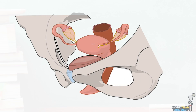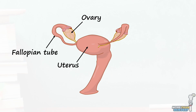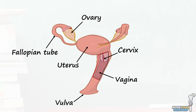The female reproductive system might seem complicated, but we can start by breaking it down into a few key areas. There are the ovaries, the fallopian tubes, the uterus, the cervix, the vagina, and the vulva. In today's video we'll focus on the internal reproductive organs only.